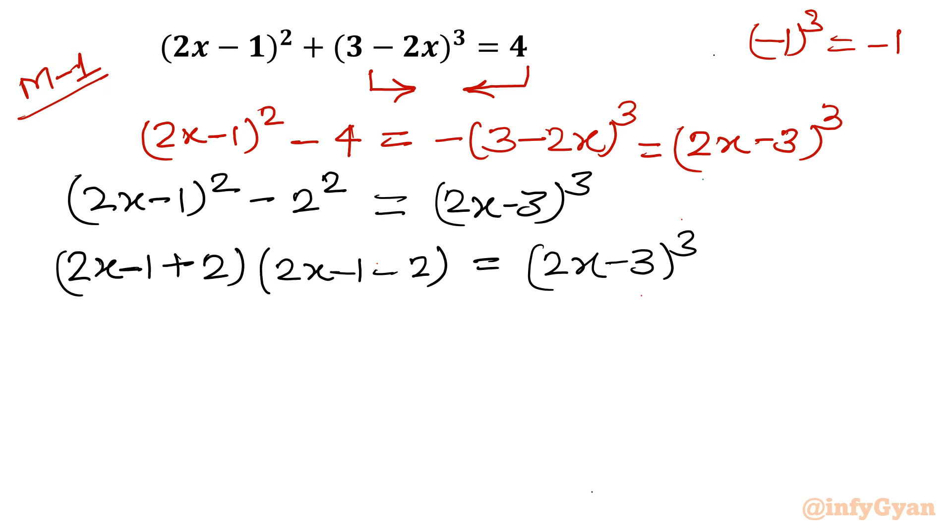2 minus 1 is 1. So it will give us (2x + 1). Second bracket, it will give us (2x - 3) = (2x - 3)³.